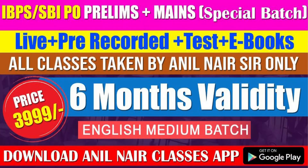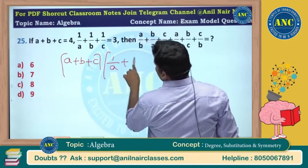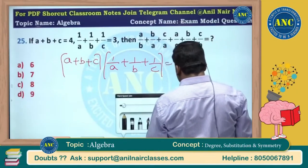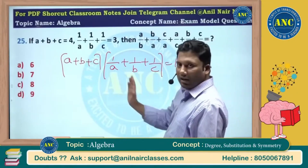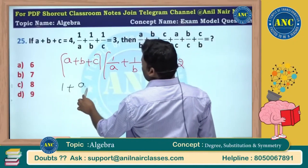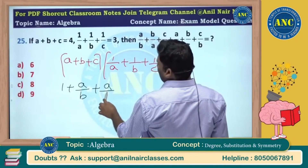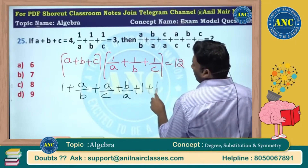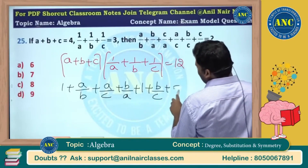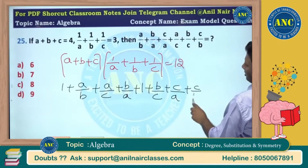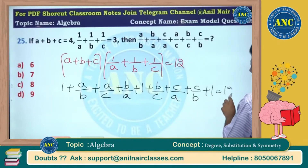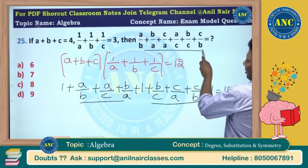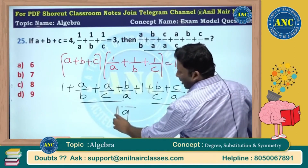a plus b plus c into 1 by a plus 1 by b plus 1 by c equals 12. Expanding: a into 1 by a gives 1, plus a by b, plus a by c, plus b by a, plus b into 1 by b gives 1, plus b by c, plus c by a, plus c by b, plus 1. This is a by c plus b by a plus c by b plus 1 equivalent to 12. Total 6 such cross terms plus 3 diagonal ones. The value we require is 12 minus 3, which is 9.